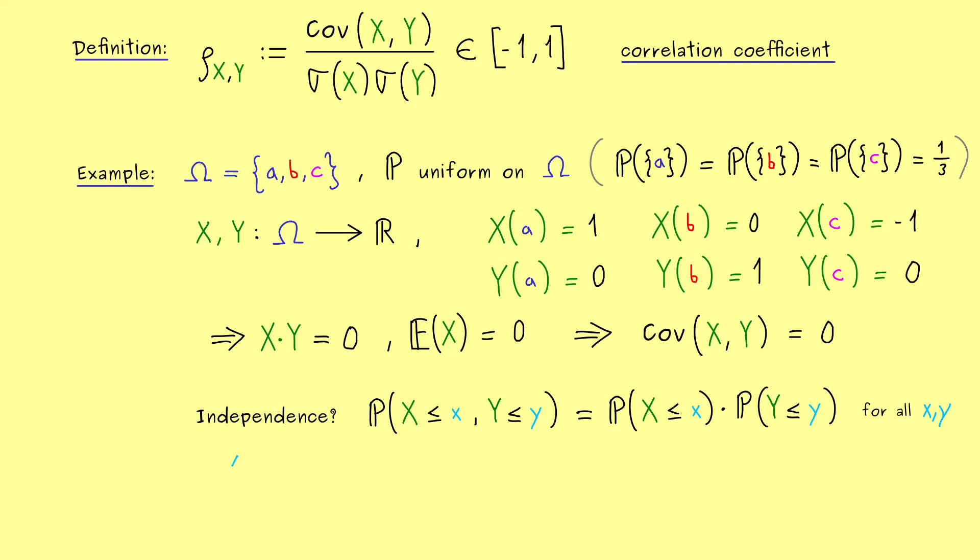Therefore, I would say, let's test what happens if we set x to minus 1 and y to 0. Then, on the left hand side, let's put in all the elements of omega that fulfill both inequalities. And there we see, this is only fulfilled for c. Only there, X is sent to minus 1.